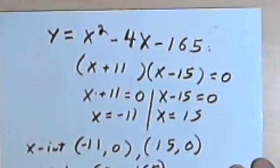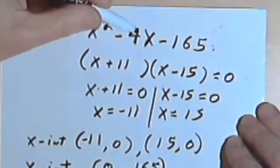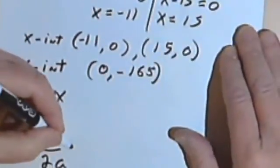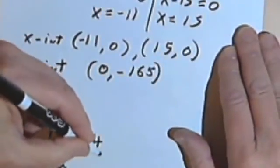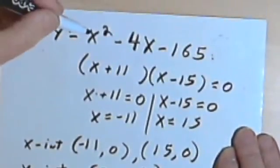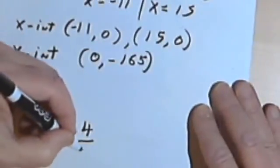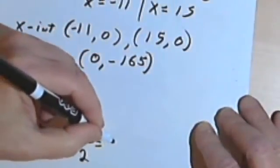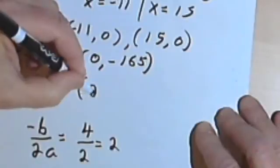If I go back to the original equation, b was negative 4, so negative b would be positive 4, and a is just 1, so 2a is 2. So the vertex is going to be, the x-value for the vertex is going to be at 2,